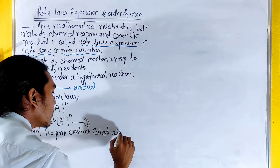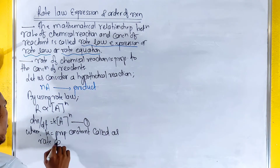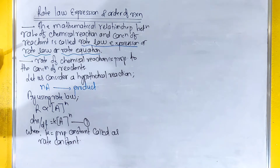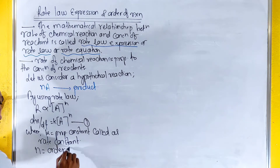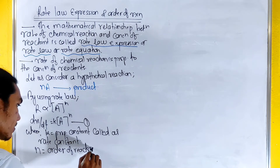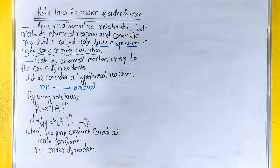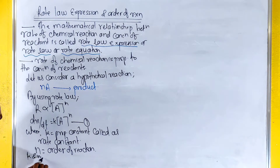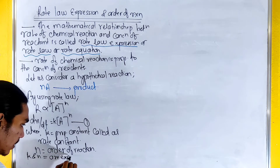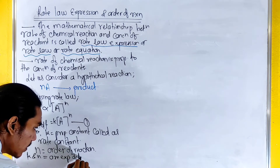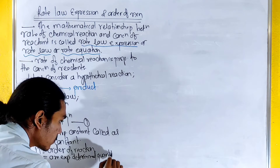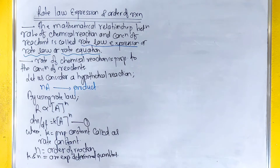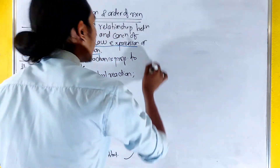k is called the rate constant. The order of reaction, represented by n, is an experimentally determined quantity.